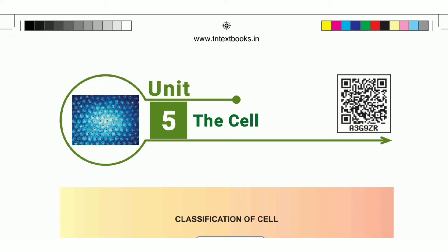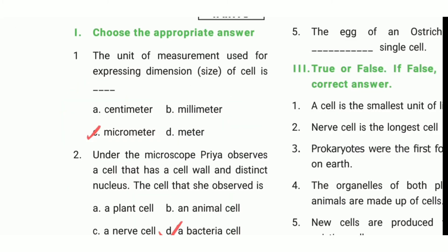Standard 6 Science, Unit 5 lesson — let's look at the book back answers. Choose the appropriate answer. First one: the unit of measurement used for expressing the dimension of a cell is dash. The answer is C, micrometer.